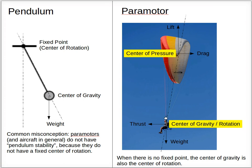In the case of the paramotor, it's essentially the lift-to-drag ratio of the wing that determines the longitudinal orientation. In this diagram, our moment arm would be from the center of gravity to the center of pressure. As you can see, lift and drag have orthogonal components to this moment arm which causes rotation, and the balancing of these components causes the stable orientation. Essentially, the lift-to-drag ratio is what determines the pitch orientation of a paramotor or a paraglider.